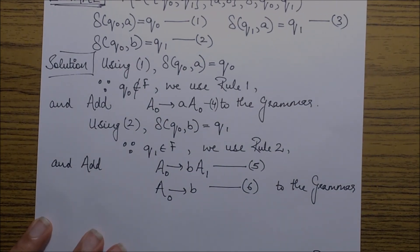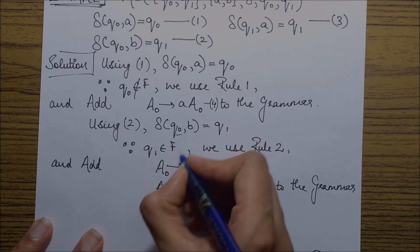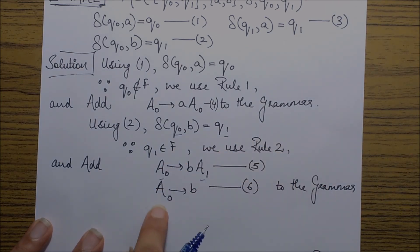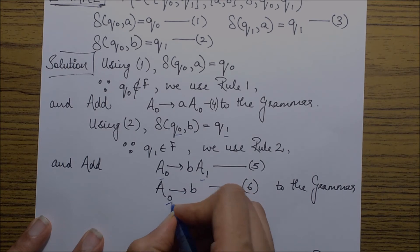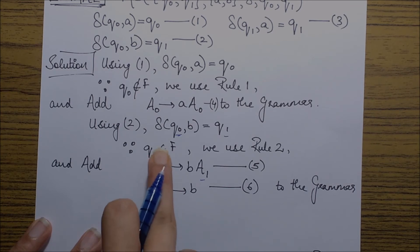So in our case using this transition, the productions that we form are A naught goes to bA1, the subscripts should match, and A naught goes to b, the subscript should match again. So this transition basically results in two productions which are labeled as 5 and 6.